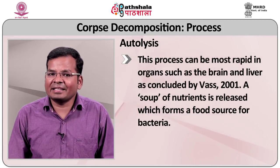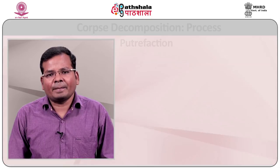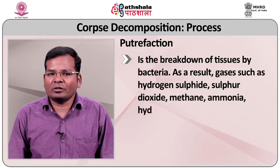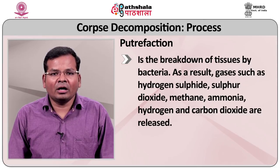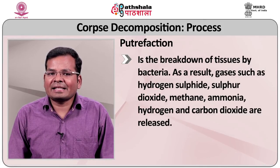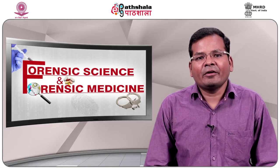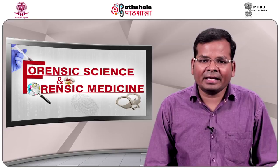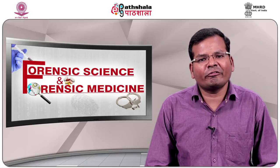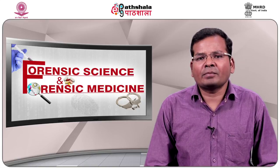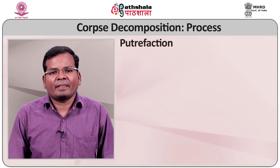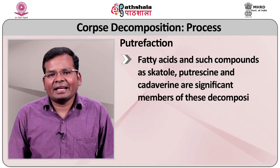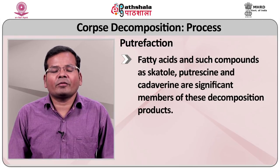A soup of nutrients is released, which forms a food source for bacteria. Putrefaction is the breakdown of tissue by bacteria. As a result, gases such as hydrogen sulphide, sulphur dioxide, methane, ammonia, hydrogen, and carbon dioxide are released. Alongside this, anaerobic fermentation takes place and volatile propionic acid and butyric acids are formed. The body undergoes active decay in which the protein sources are broken down into fatty acids. Fatty acid compounds such as eschatol, putrescine, and cadaverine are significant members of this decomposition product.